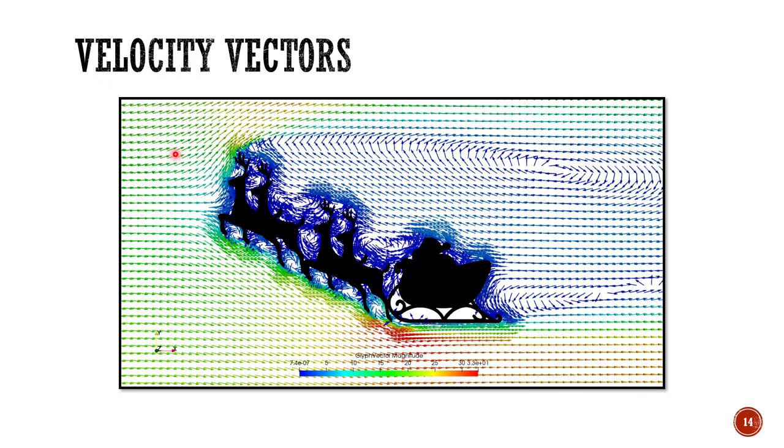These are the velocity vectors. Vectors are used to denote the direction of our air flow. You can see that the air is flowing over the wall boundaries, that is the reindeers and our Santa.